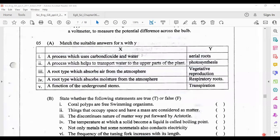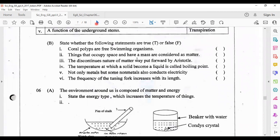B part: you have to put T and F. Coral polyps are free swimming organisms - wrong. Things that occupy space and have a mass are considered as matter - correct. The discontinuous nature of matter was put forward by Aristotle - wrong, it was put forward by Democritus. The temperature at which a solid becomes a liquid is called boiling point - wrong, it's melting point. Not only metals but some non-metals also conduct electricity - correct. Only carbon is a non-metal that can conduct electricity. Next one: the frequency of tuning fork increases with its length - wrong. Frequency increases with decreasing length.